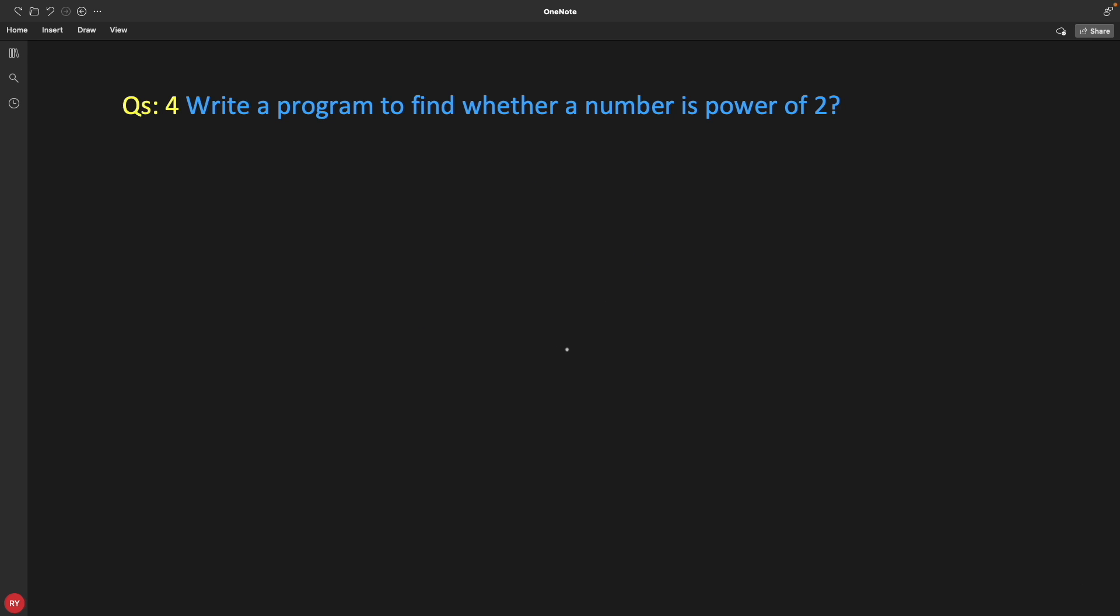Hello friends, this is Rupesh and you are watching CPP Nerds video series on bit manipulation interview questions. This is question number 4: write a program to find whether a number is power of 2 or not.